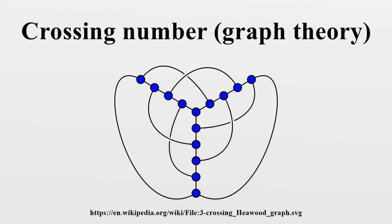In graph theory, the crossing number CR of a graph G is the lowest number of edge crossings of a plane drawing of the graph G. For instance, a graph is planar if and only if its crossing number is zero.